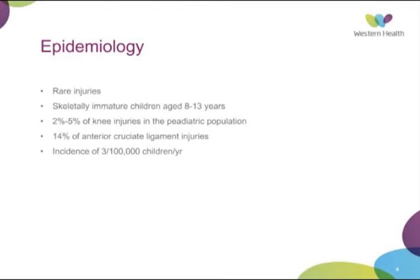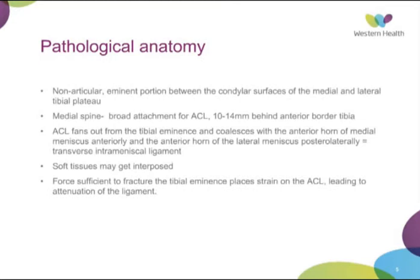In terms of anatomy, the tibial eminence or tibial spine is the non-articular eminent portion between the condylar surfaces of the medial and lateral tibial plateau. The medial spine acts as the broad attachment point for the ACL, about 10 to 14 millimetres behind the anterior body of the tibia. The ACL fans out from the tibial eminence and coalesces with both the anterior horn of the medial and lateral meniscus, attached under the transverse intermeniscal ligament. These are important later in management, because it's these soft tissues — the anterior horns and the transverse intermeniscal ligament — that can get interposed in the fracture fragment and block reduction.